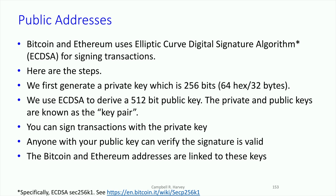In a digital signature algorithm, we are able to sign transactions using our private key. When we produce that signature, anybody looking at the signature and knowing our public address knows for sure that the person signing actually owns or is in possession of the private key.